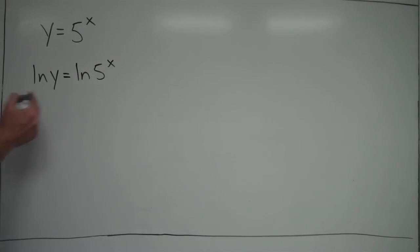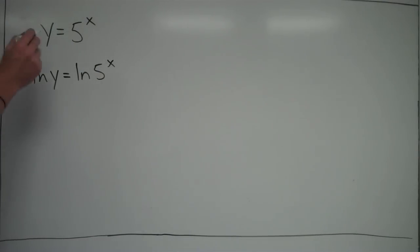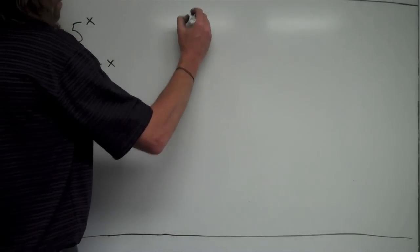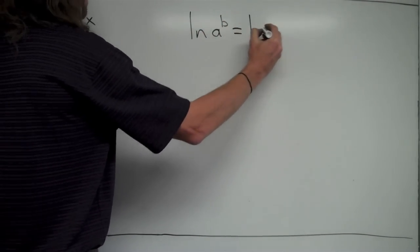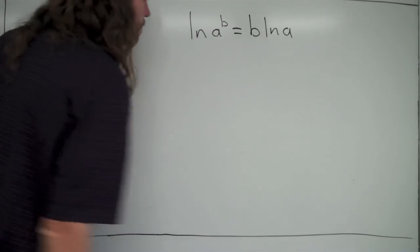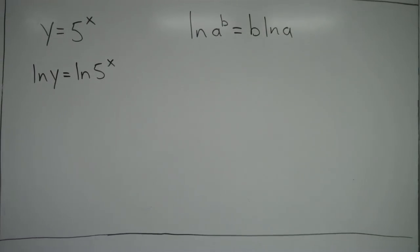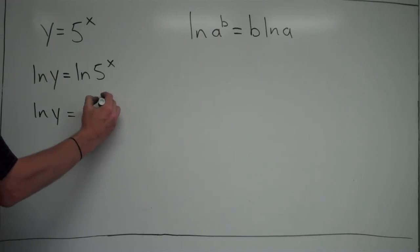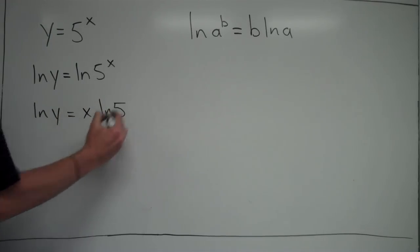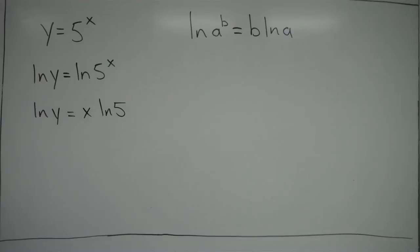Now, the reason why I'm doing this is because that x in the exponent is our issue right here. We don't know how to deal with that. But we have a natural log rule that says if we have something that's like natural log of a to the b, that's the same thing as b times natural log of a. So, in this case, I have like the 5 is like the a and the x is like the b. So I can take that x and bring it out in front here and have natural log of y is equal to x times natural log of 5. So now I have that x out of the exponent.